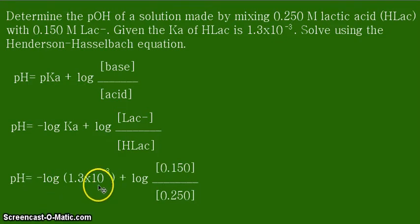We now have plugged in the values. Our Ka is equal to 1.3 times 10 to negative 3, and the concentration of our base is 0.150 molar and the concentration of our acid is 0.250. So all we need to do now is first get the quotient of this, then the logarithm of that quotient, then we add it to the negative logarithm of this given Ka.